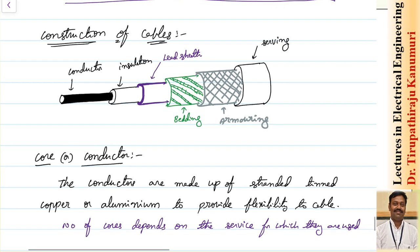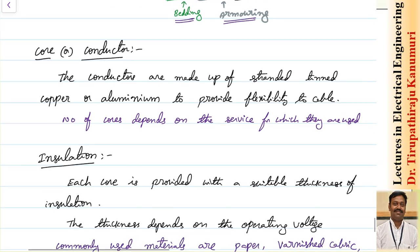The general construction of a cable consists of a conductor to carry current, surrounded by an insulating material. Above the insulation, a lead sheath is provided to protect against moisture absorption and mechanical damage. Above the lead sheath, a bedding layer is applied, followed by armoring which protects the cable from mechanical damage during digging or laying. Above the armoring, a serving layer protects against corrosion and rusting. Note that bedding and armoring may or may not be used depending on the application.